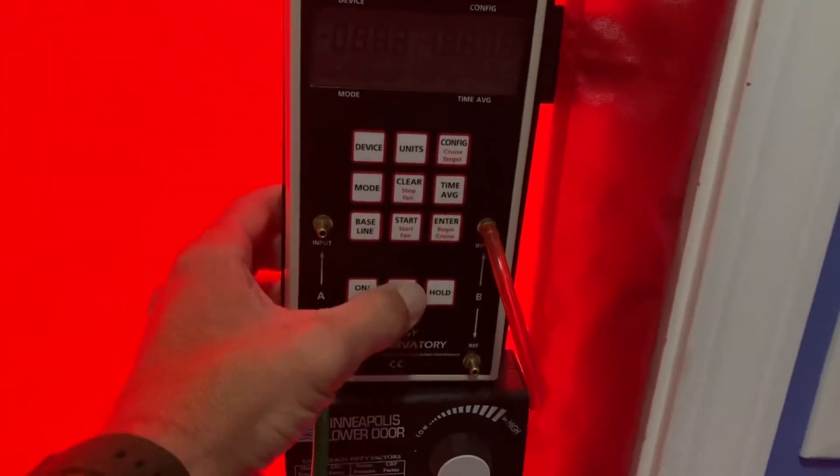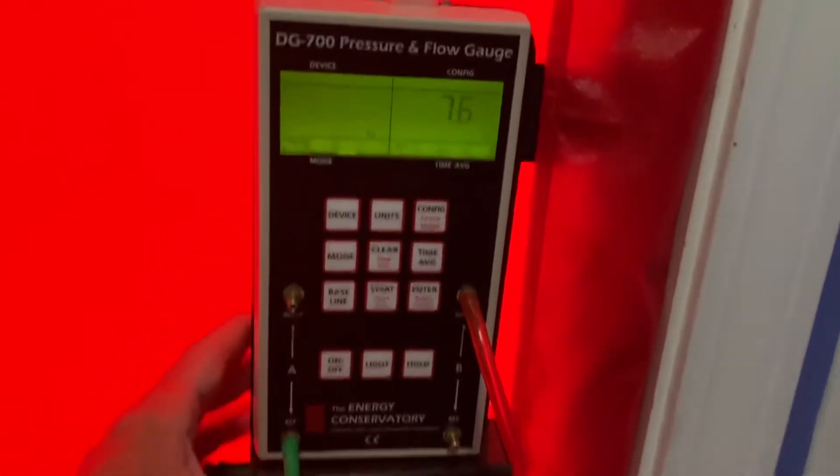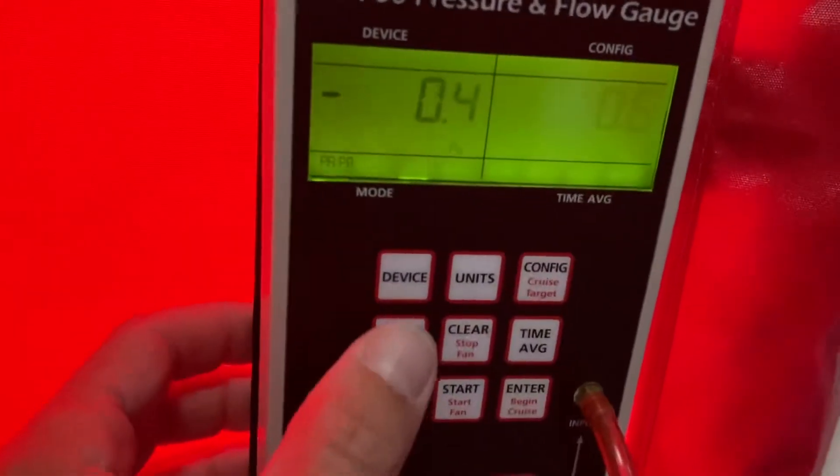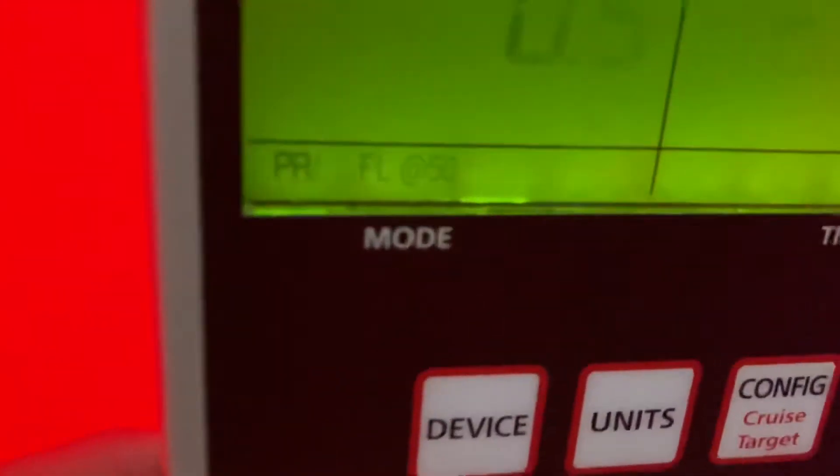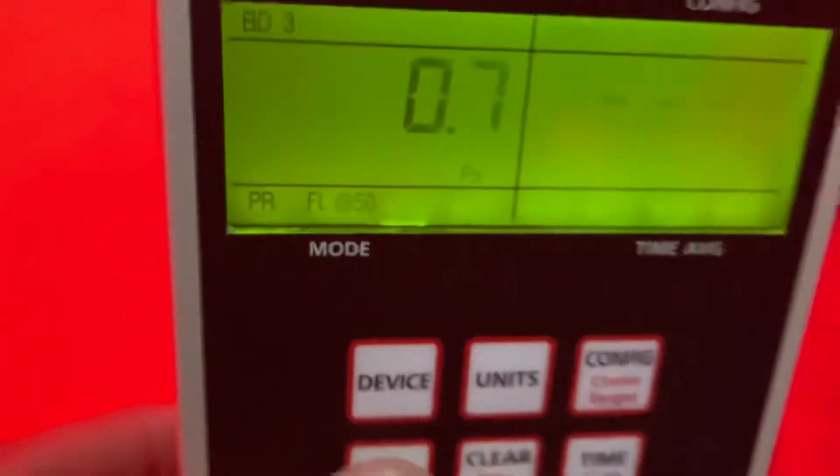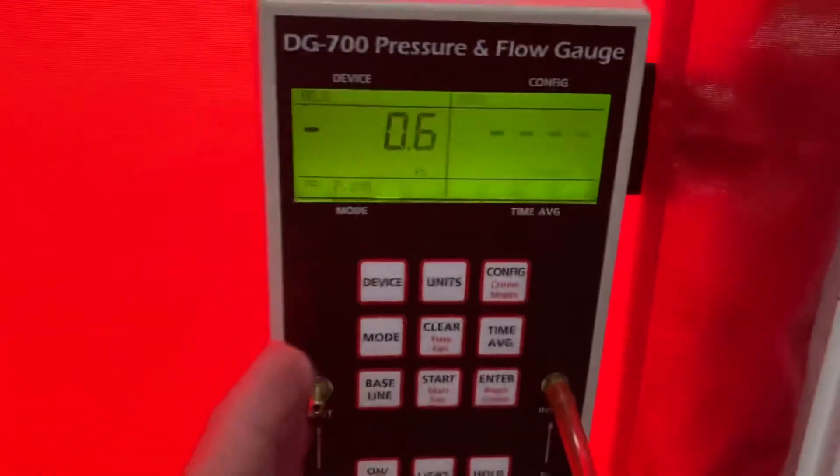From there we'll start turning on the manometer. We're going to hit the on/off button and then we're going to push light—it always helps in these dark homes. Then we're going to hit mode twice. When you first turn it on it's just pressure and pressure. If you push mode twice you'll get pressure on the A channel and flow at 50 on the B, which is what you need.